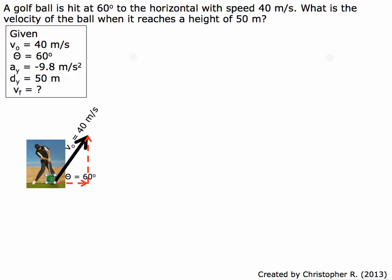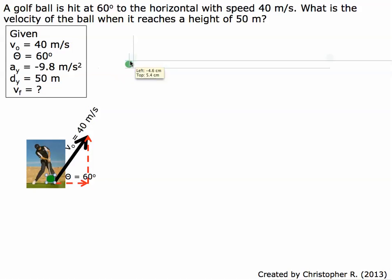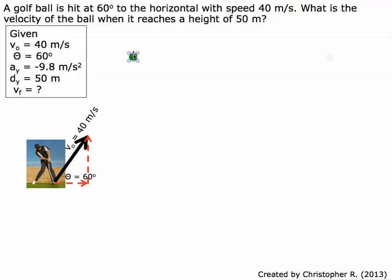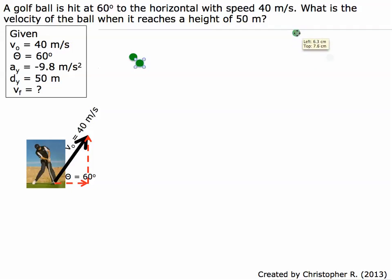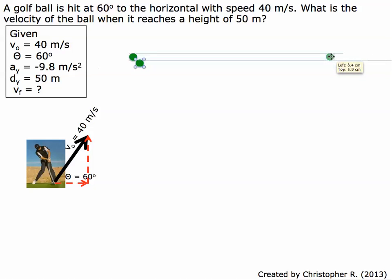The ball is going to be hit at an initial velocity of 40 meters per second at an angle of 60 degrees, and it's going to go through the air and hit about 50 meters in the air — from here to here is 50 meters. It's going to go through an arc, start coming back down, and then hit 50 meters again at this height, and then keep going until it hits the ground again.